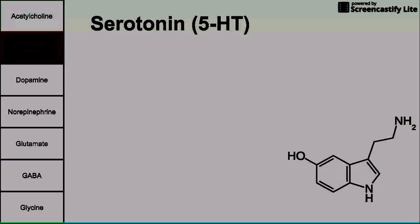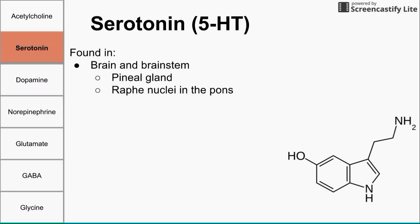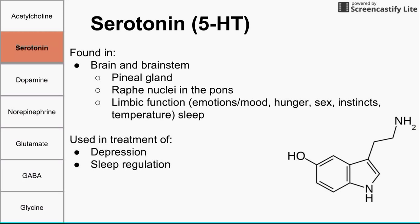Serotonin, abbreviated 5-HT based on its chemical name, is found in the brain and brainstem — specifically in the pineal gland and the raphe nuclei. The raphe is found in the pons, a section of the brainstem. Serotonin is involved in limbic function, which regulates emotions, mood, hunger, sex, instincts, temperature, and sleep. As you might guess from knowing about SSRIs, serotonin is used to treat depression and sleep regulation. It makes sense that if it's involved in limbic function, it would be used for sleep regulation.